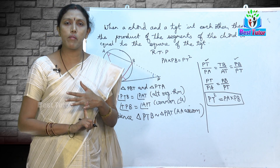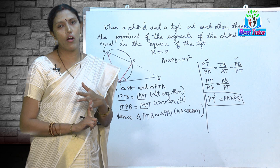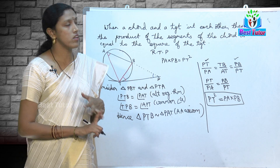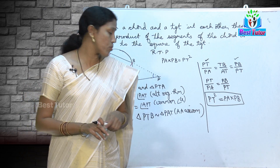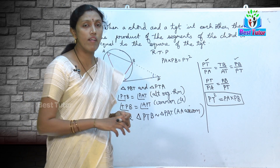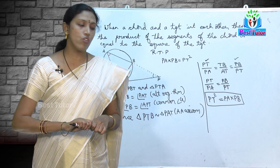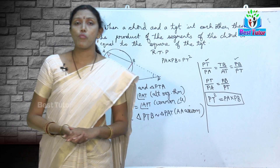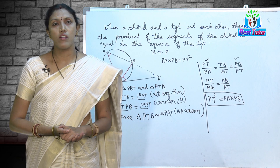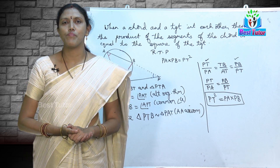We have proved both the alternate segment theorem and the theorem about intersecting chord and tangent. These are the two theorems we have learned in this video. In the coming videos we are going to learn some other concepts of mathematics. Let us meet in the next video. Thank you.